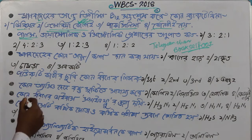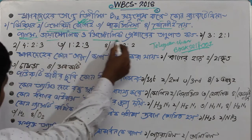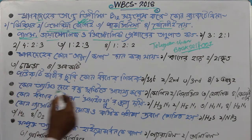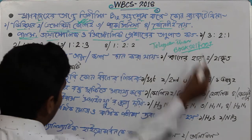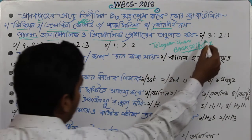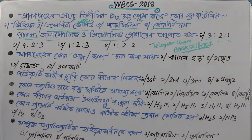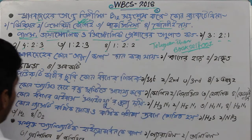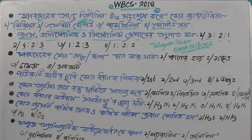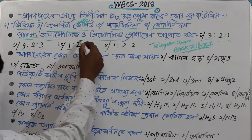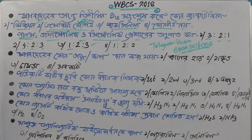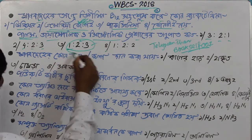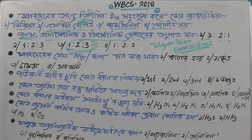We know that pulse pressure, diastolic pressure, and systolic pressure are the three parts. The options given are: 3:2:2:1, 4:2:2:3, 1:2:2:3, and 1:2:2 in four parts. The answer is pulse pressure to diastolic pressure is 1:2:3. This is very important — please remember this.